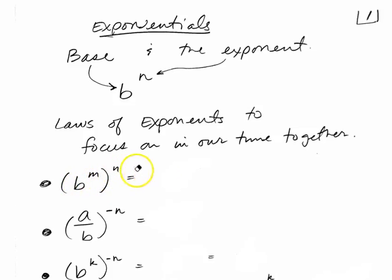And so we're just going to focus on some of the laws that are in the textbook. Not all of them here. We will use them all, but just a couple to highlight. So b to the m, then the quantity raised to the n power. You would multiply the exponents. A over b, so that's just a fraction in there, to the negative n power.